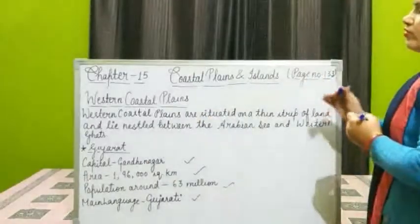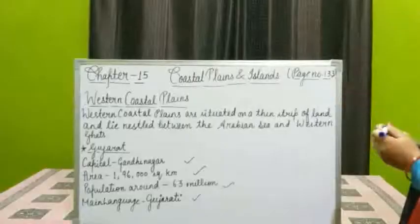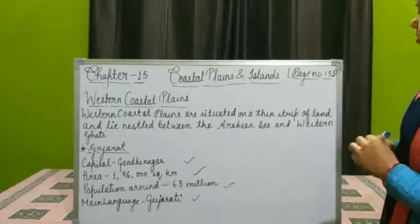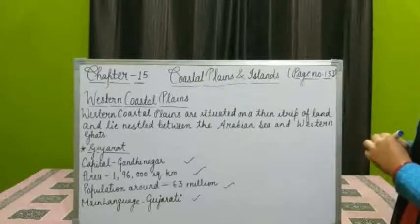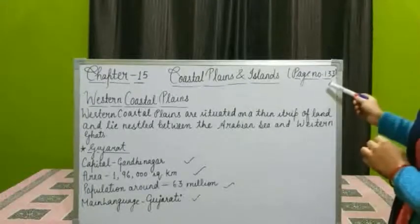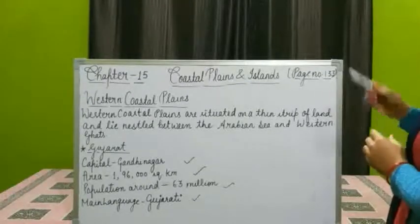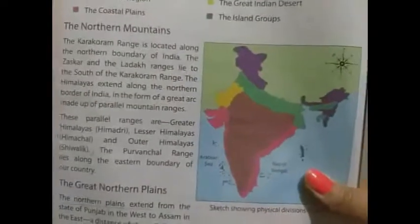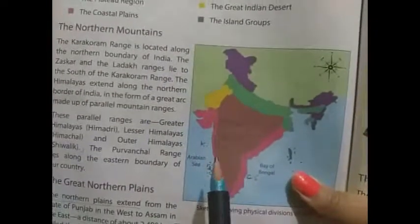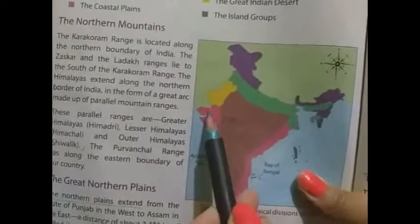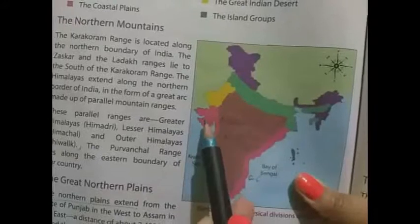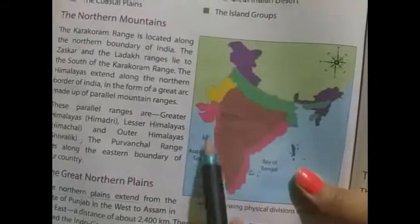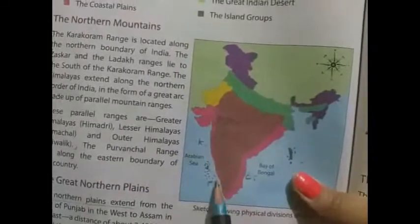First, we will see the western coastal plains in the map, then we will go to page number 133. In the west direction of the map, you can see these are the western coastal plains.